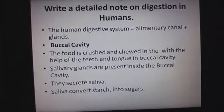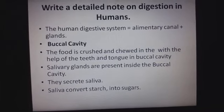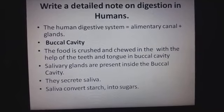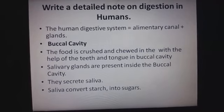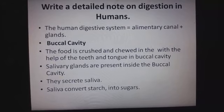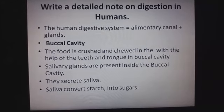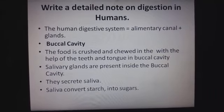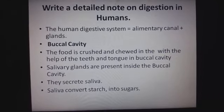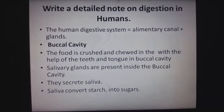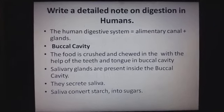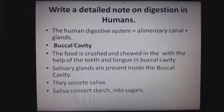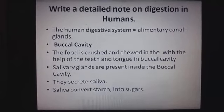In the buccal cavity, we take food from our mouth by the process of ingestion — ingestion means taking food into the mouth. Food is crushed and chewed with the help of teeth and tongue. In the buccal cavity, or oral cavity, we have salivary glands that secrete saliva. Saliva converts starch into sugar.